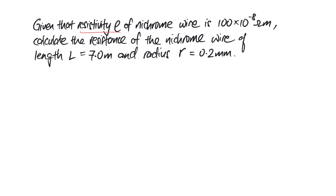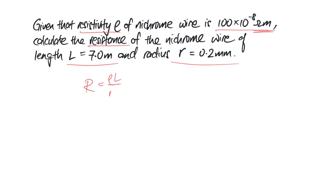You are given the resistivity of a nichrome wire, which is 100 times 10 to the power of minus 8 ohm meters. And you are supposed to find the resistance of this nichrome wire when the length is 7 meters and the radius is 0.2 mm. Obviously, you'll know that I'll be using the formula R equals rho L over A.